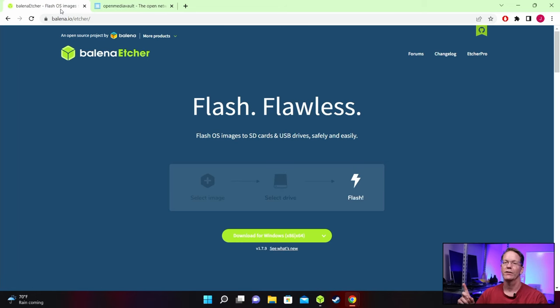The first thing we want to do is go to Balena Etcher, and I'll leave a link in the description below. We're going to download this and then install it. This is the program we're actually going to use to burn our image to our USB drive.